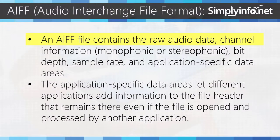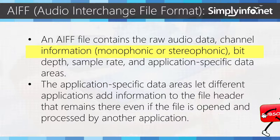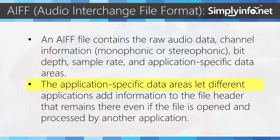An AIFF file contains the raw audio data, channel information — monophonic or stereophonic — bit depth, sample rate, and application-specific data areas. The application-specific data areas let different applications add information to the file header that remains there even if the file is opened and processed by another application.